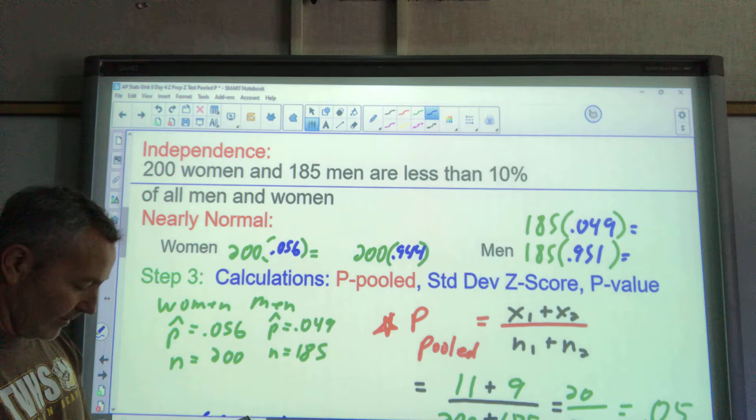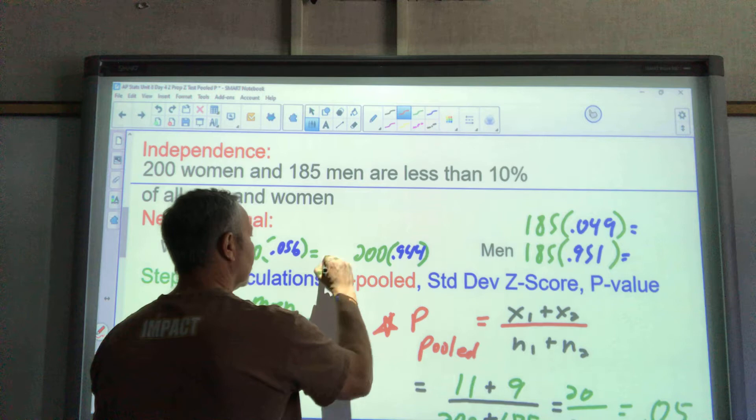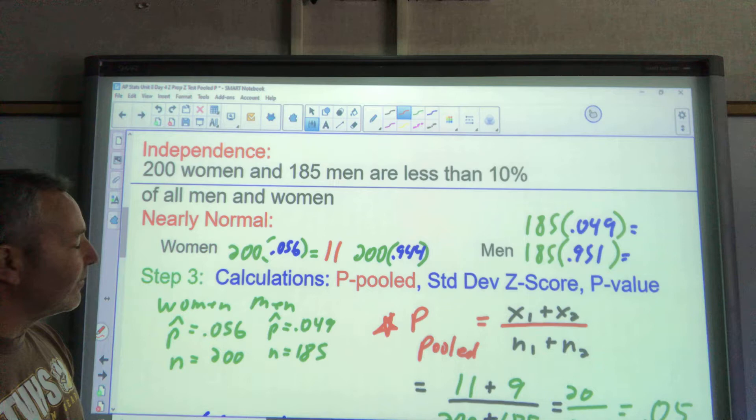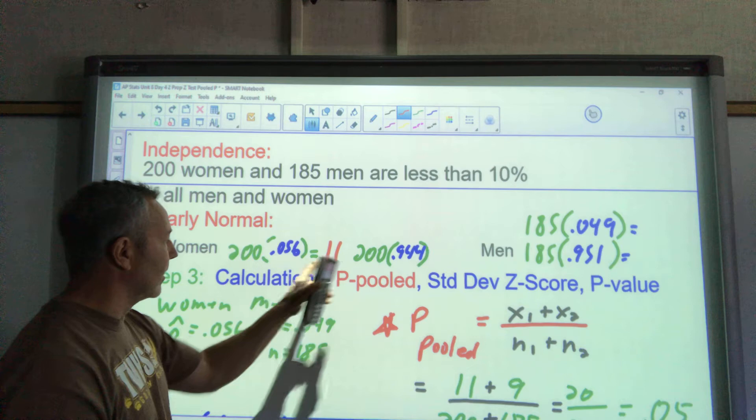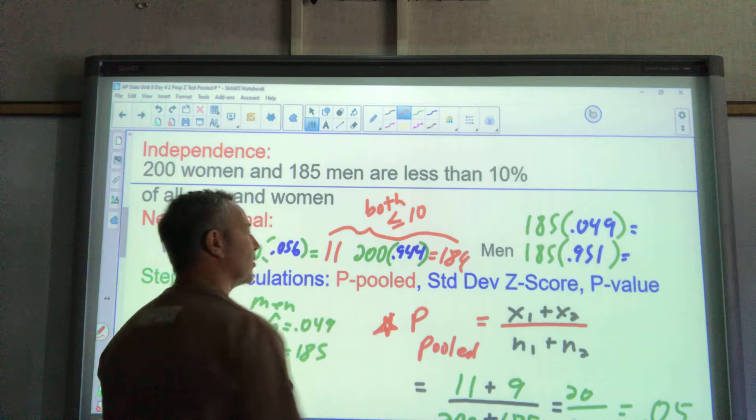For the men, it was 0.049. So we'll use those P hat values in there because at the time we conduct our samples, that's the only proportion we have to go by before we do the pooled one. I'm going to do one minus 0.056 to get the Q value, 0.944. And over here for the men, I have 0.049. One minus 0.049 is going to get me 0.951. These are all supposed to be greater or equal to 10. That's our check.